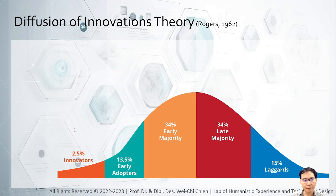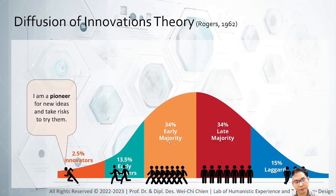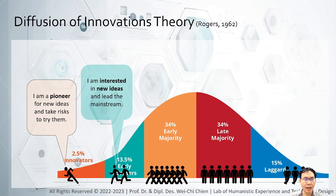According to Rogers, there are five different types of users in our society: innovators, early adopters, early majority, late majority, and laggards. The innovators are a small part of the population — they are pioneers who love new ideas and will take any risk to try them out. After the pioneers, there are early adopters. They observe what the innovators are doing and are also interested in new ideas. They are a bigger group than the innovators, and often they lead the mainstream.